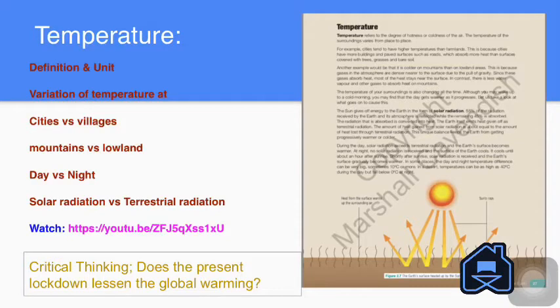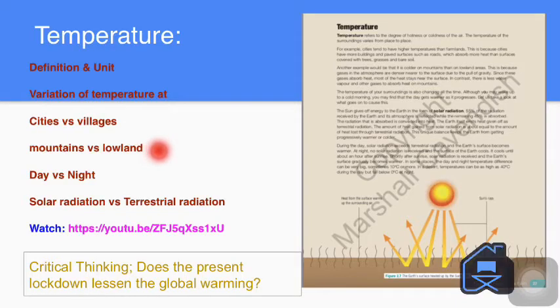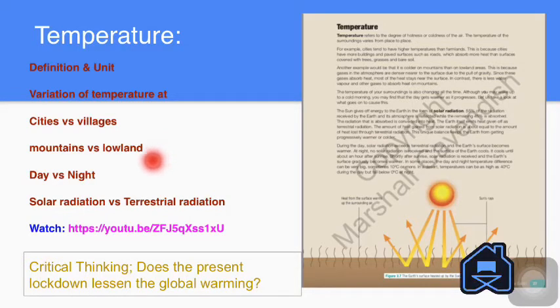Second, mountains versus lowland. It is colder on mountains than on lowland. As you move up a highland, the Earth's atmosphere contains gases known as greenhouse gases which absorb heat from the sun. The gases are denser nearer to the surface due to the pull of gravity. Hence most of the heat is absorbed near the surface.